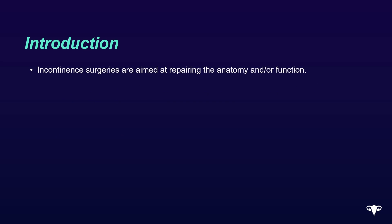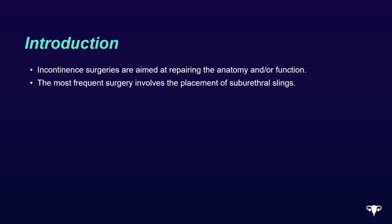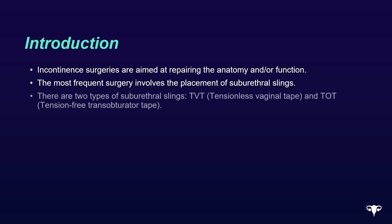Incontinence surgeries are aimed at repairing the anatomy and/or function. The most frequent surgery involves the placement of suburethral slings. There are two types of suburethral slings: TVT and TOT.